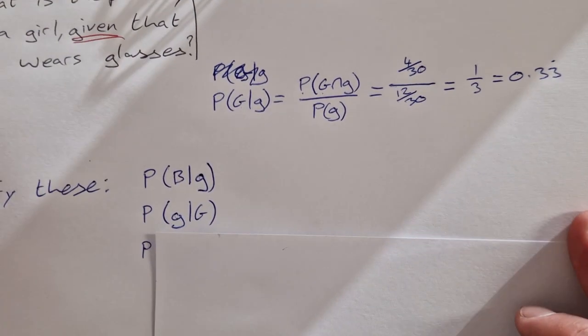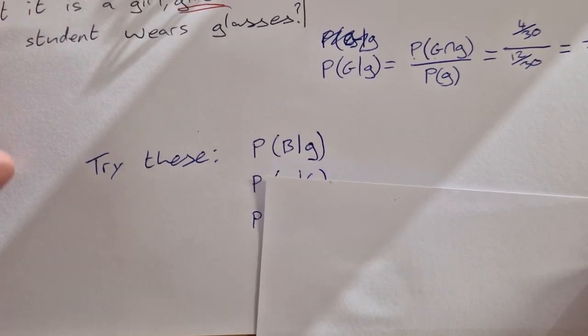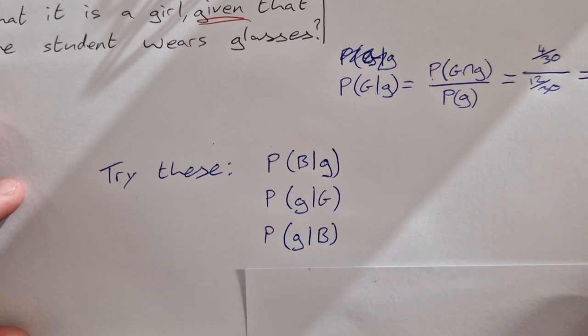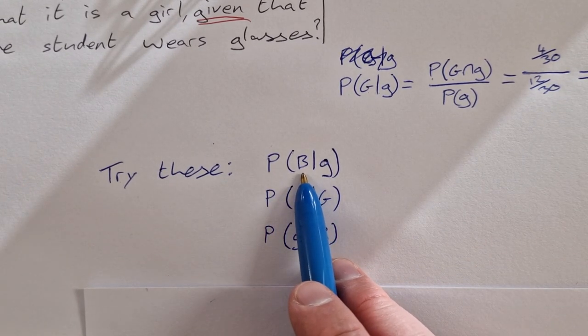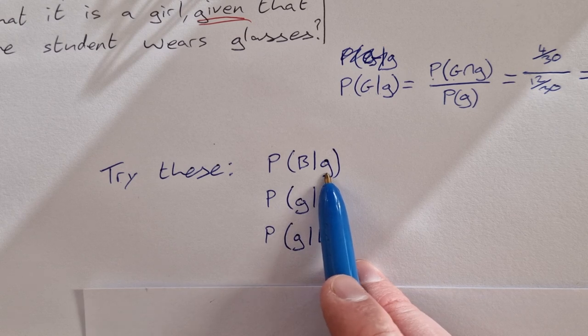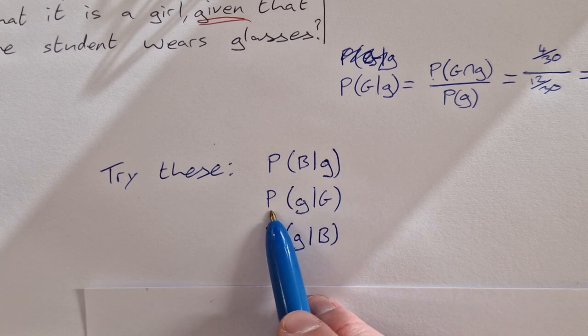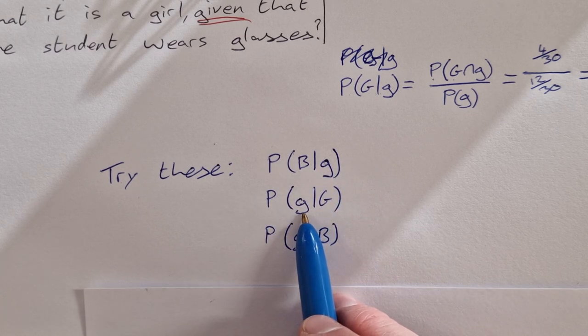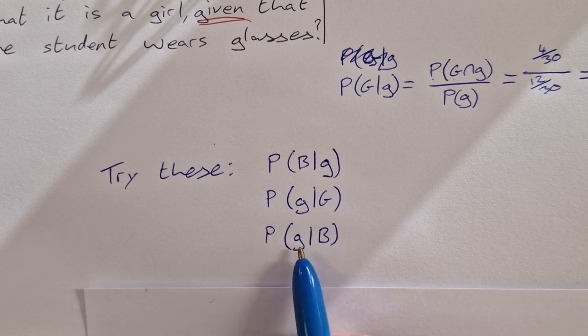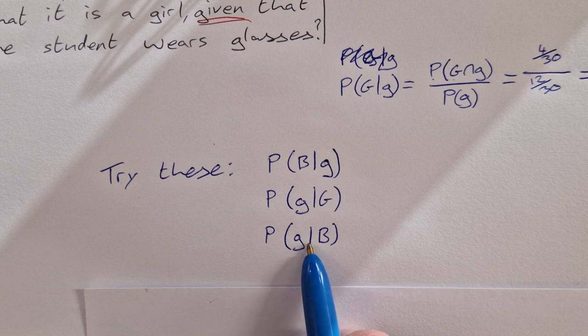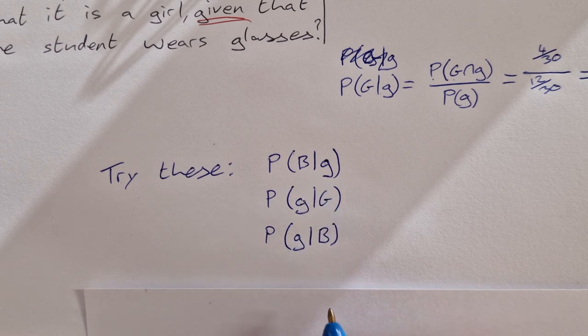So I have a few questions for you here to try using the same information as above. Get the probability of boy given that the student wears glasses, the probability of a student that wears glasses given that it's a girl, and the probability of a student wearing glasses given that it's a boy. Try them, put the answers in the comments and see if you get them right.